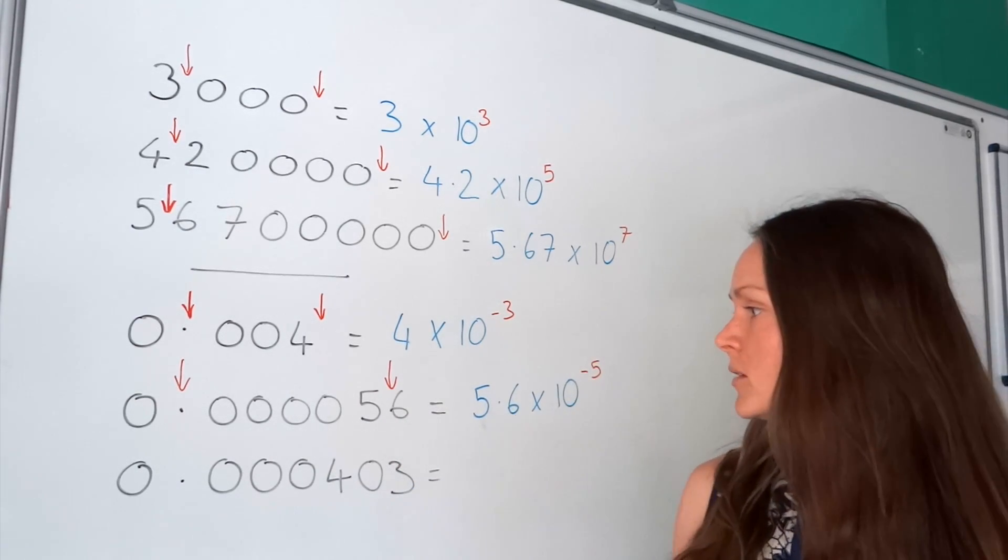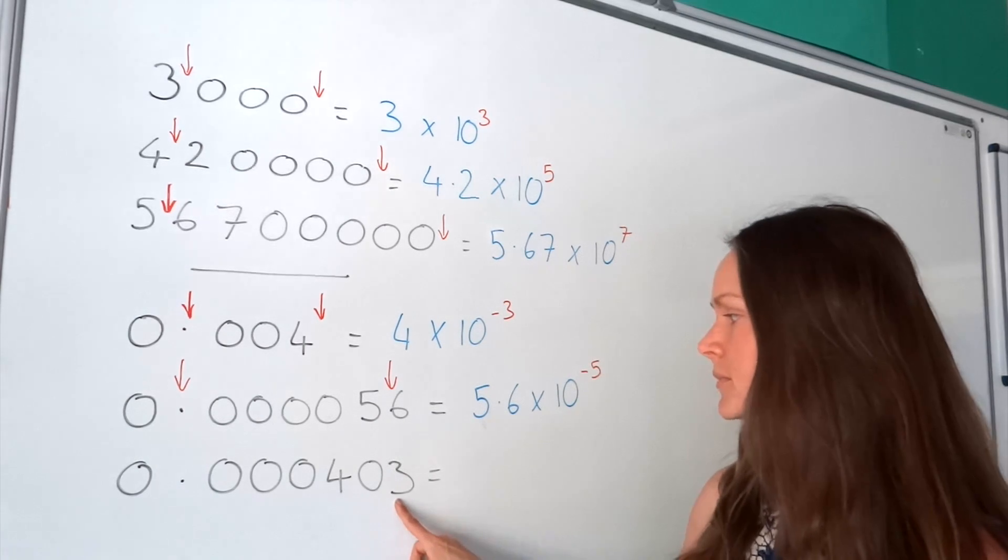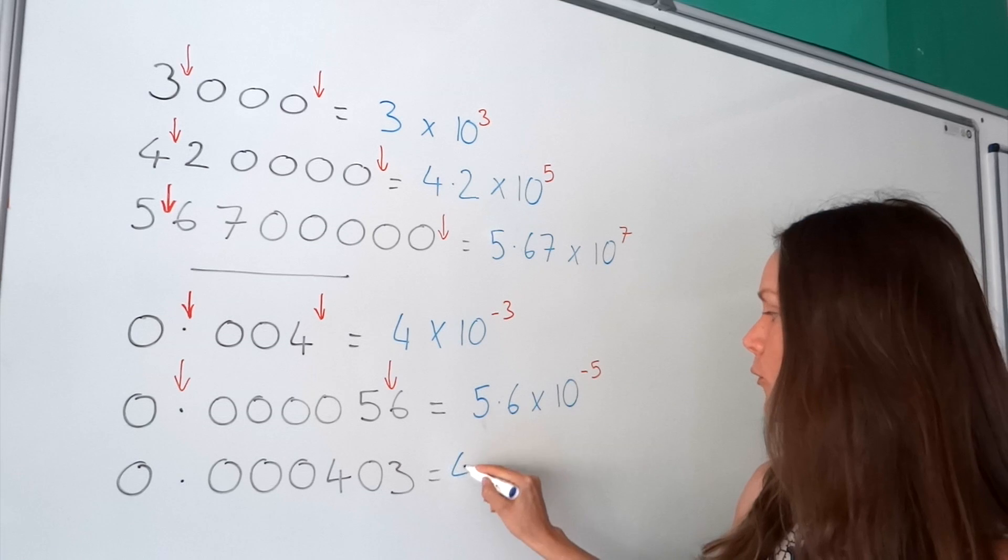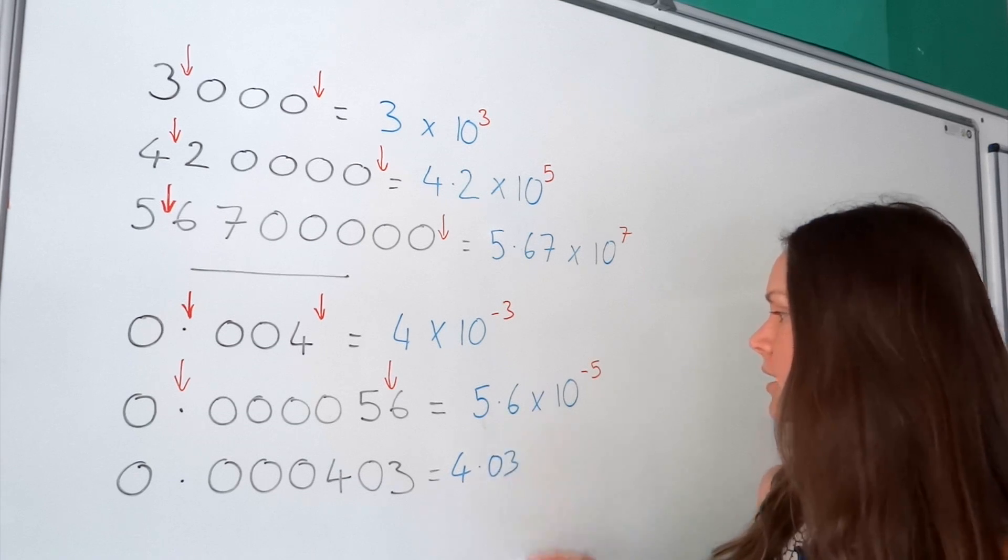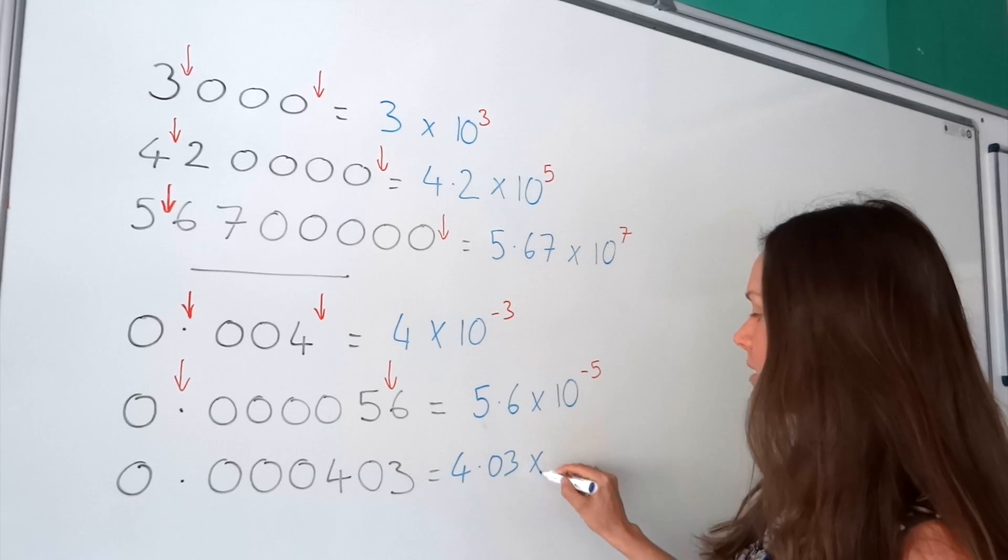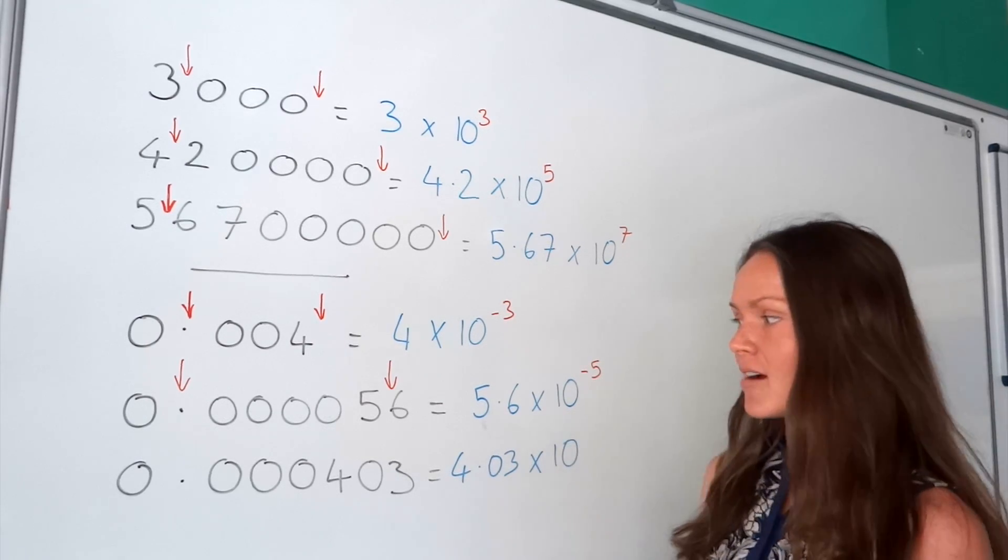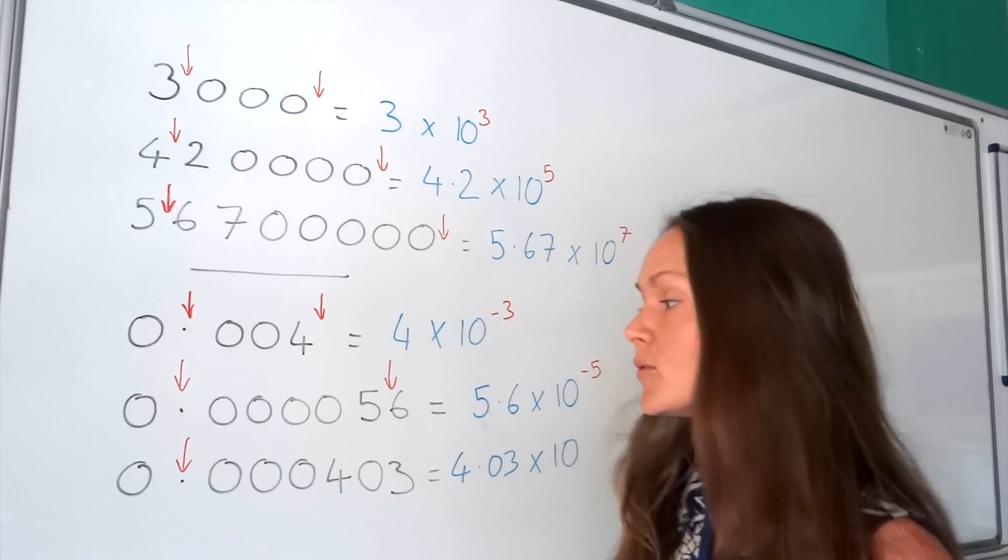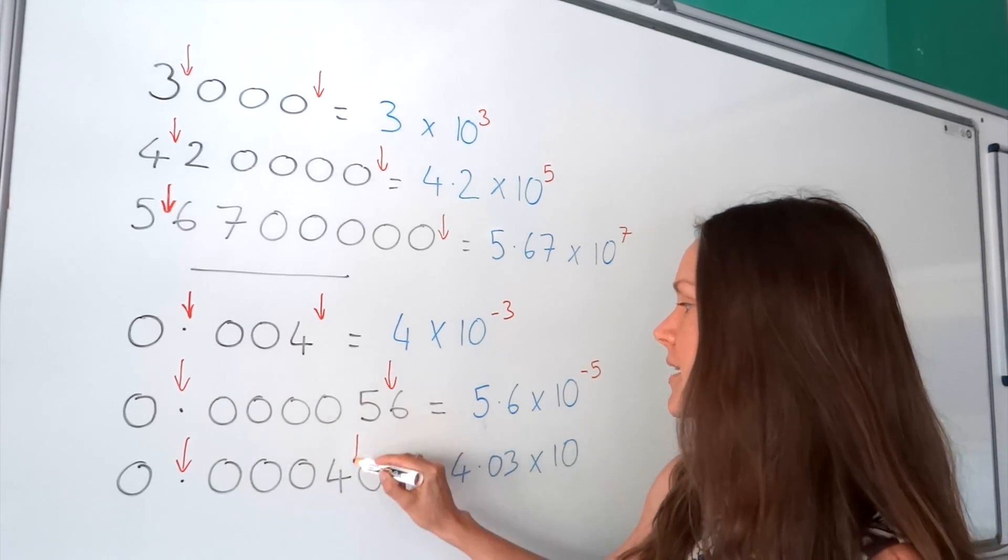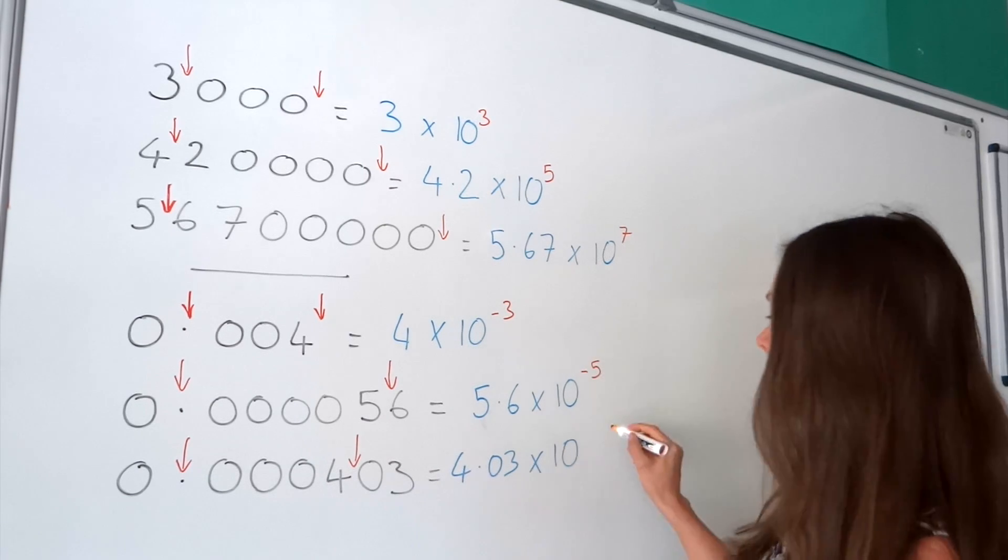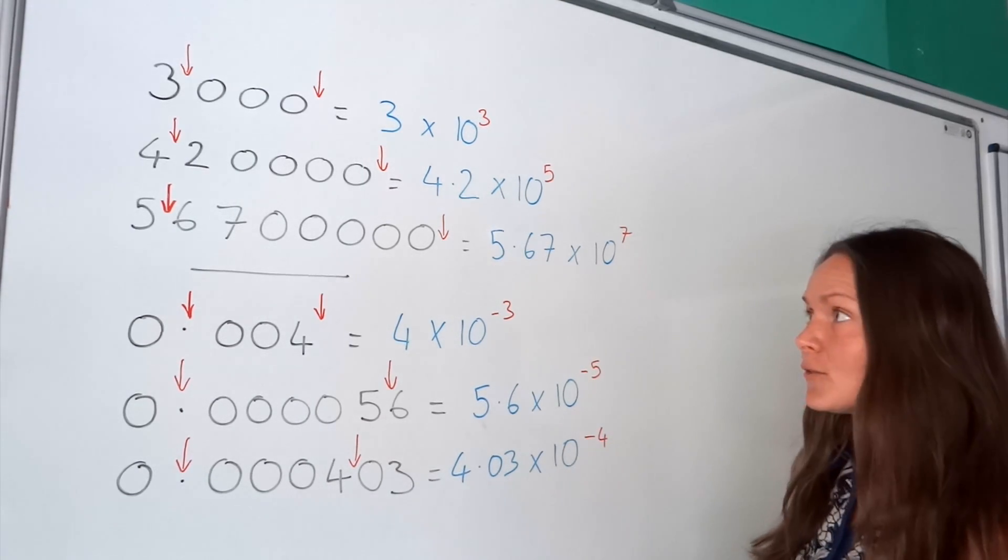Now, the last one, we're going to turn into standard form. This time, we're going to put the decimal here. So that we've got 4.03. Because this number is between 1 and 10. Then I'm going to write times 10. And then lastly, I check to see how many places the decimal has moved. So we started here. Now we're there. So 1, 2, 3, 4. So it's moved 4 places. So the power is negative 4.